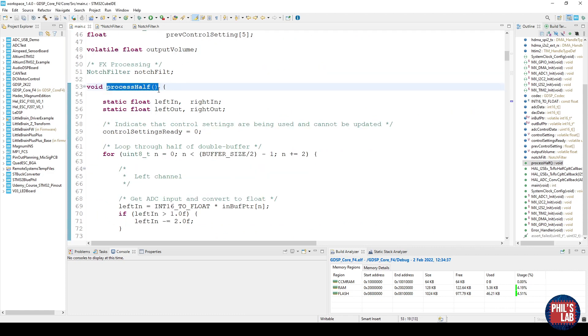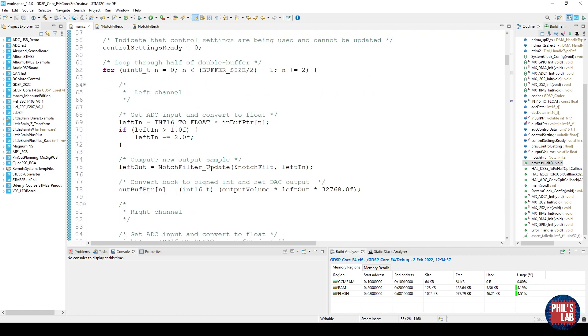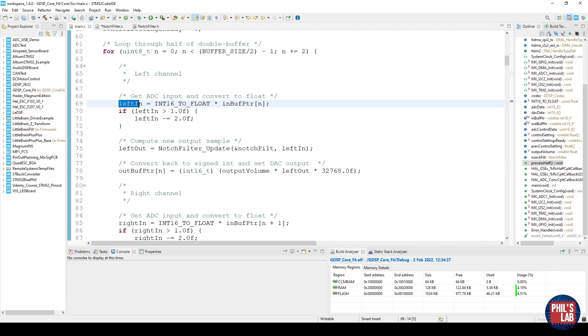The process data callback is process half and this is called by the DMA. And again all we have to do is take the left input sample which is our mono input and set our output sample by using this notch_filter_update function with our left input sample. And that's all there is to it.